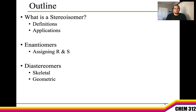Let's dive in. We're going to talk about what a stereoisomer is, some definitions and applications, and the two major classes of stereoisomers: enantiomers and diastereomers. The hint is that going back to experiment one, we actually already saw one case of a diastereomer — when we looked at geometric isomers — so hopefully this jogs your memory.